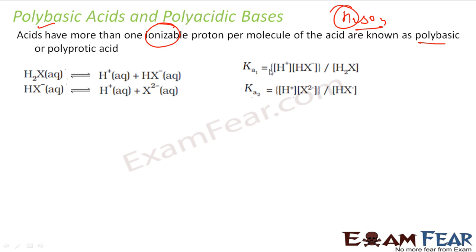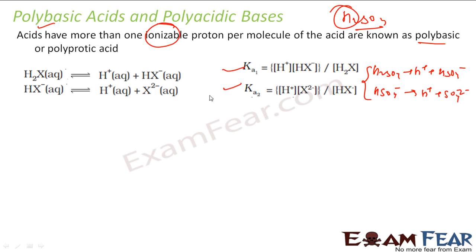For example, consider H₂X. It will first give H⁺ and HX⁻ ion. And this HX⁻ ion will again give H⁺ and X²⁻ ion. So in both cases K will be different — first will be K₁ and then K₂. The general form: H₂X gives H⁺ and HX⁻ with Ka₁ = [H⁺][HX⁻]/[H₂X]. And HX⁻ gives H⁺ and X²⁻ with a different K₂. So in polyprotic acids I get two ionizable protons and two different values K₁ and K₂.